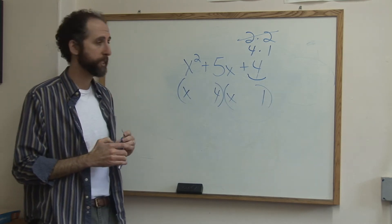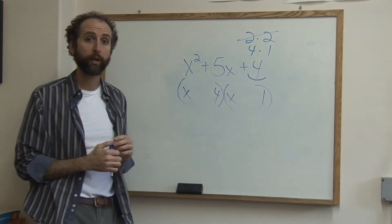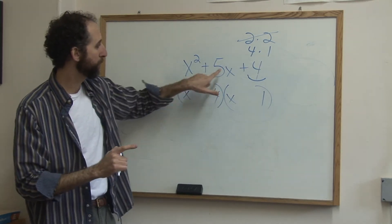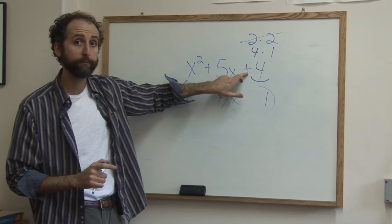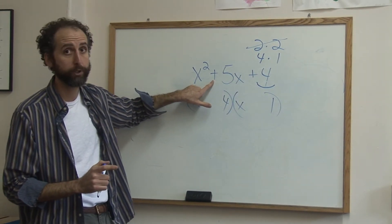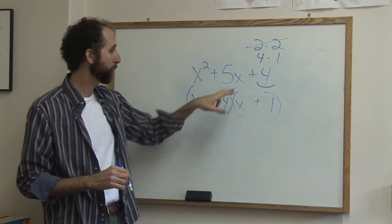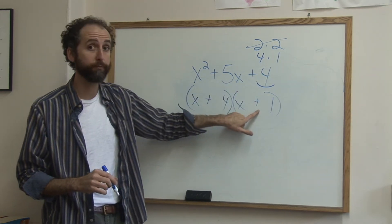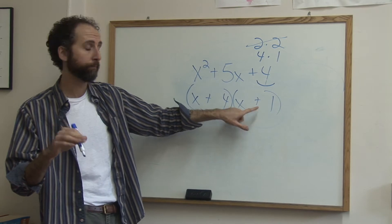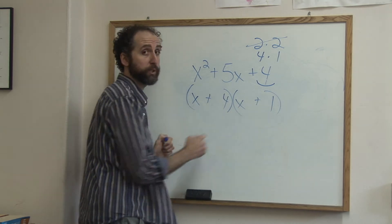Now you just have to decide about the signs. Meaning, is this positive and negative, or negative negative, or what? Because these are both positive, we want to multiply to get positive 4, but add or subtract to get positive 4 also, so they're both going to be positive. Because the only way to multiply to get a positive is for them to both be positive or both be negative. So we want to add to be positive, so they're both positive. So we have x plus 4 and x plus 1.